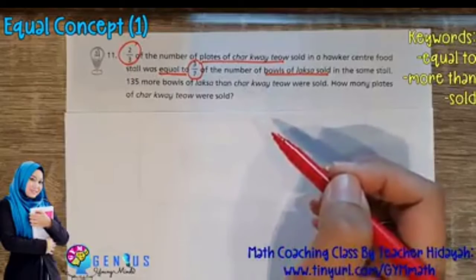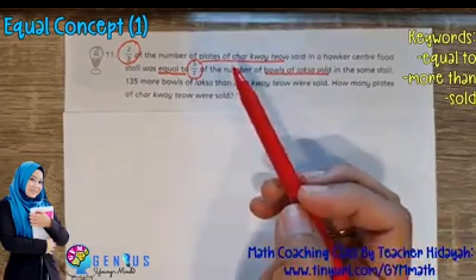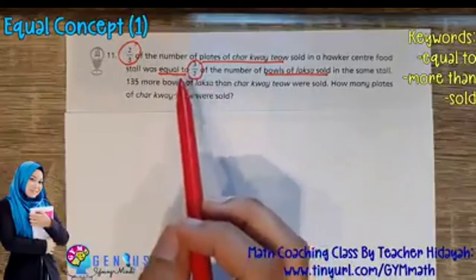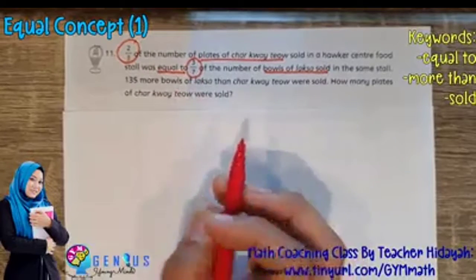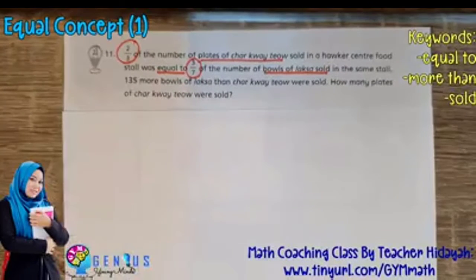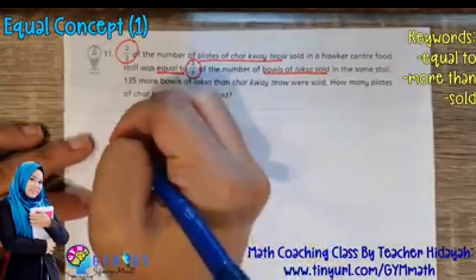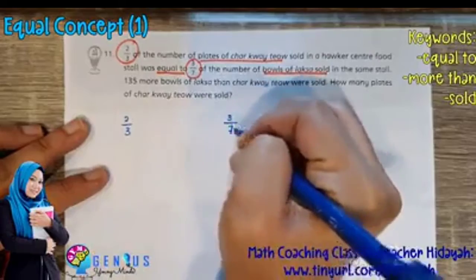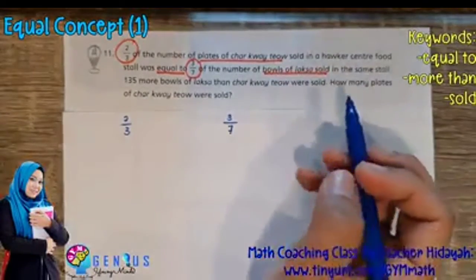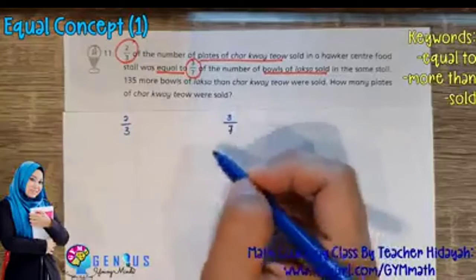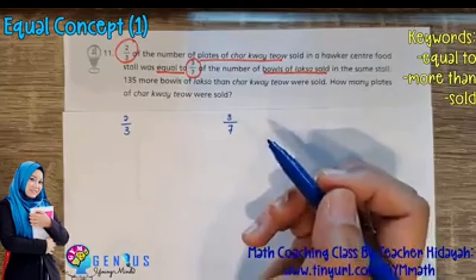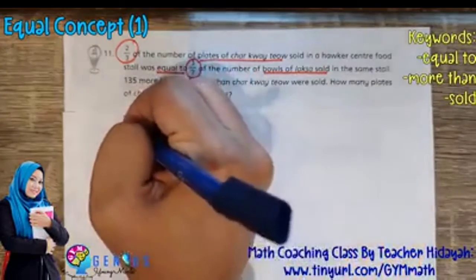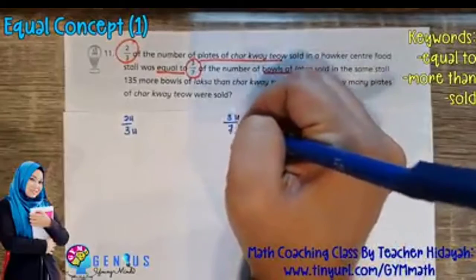To solve an equal concept question, your child must first identify the fractions in the question and convert them into units. In this case we have two-thirds and three-sevenths. For fractions in their simplest form — two-thirds and three-sevenths are both already in simplest form — they are already in units form: two units and three units for 2/3, and three units and seven units for 3/7.